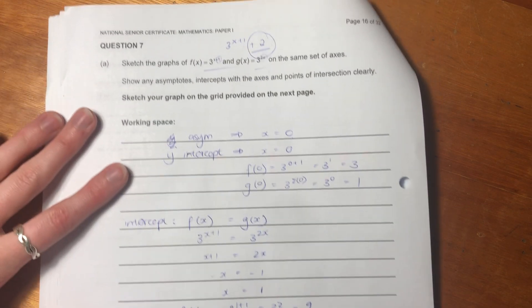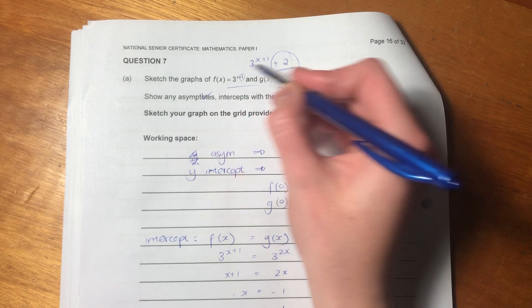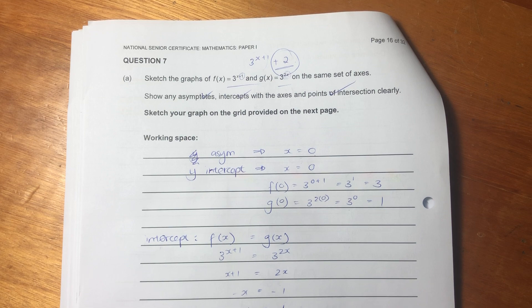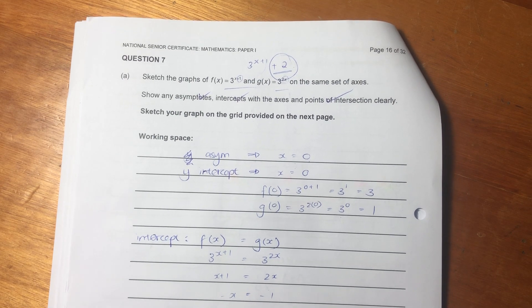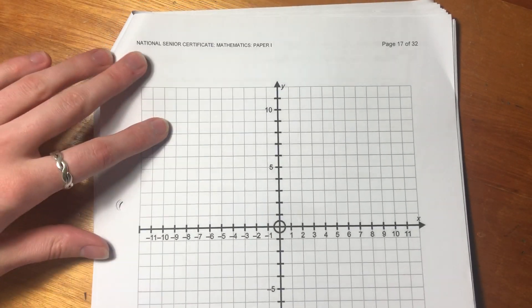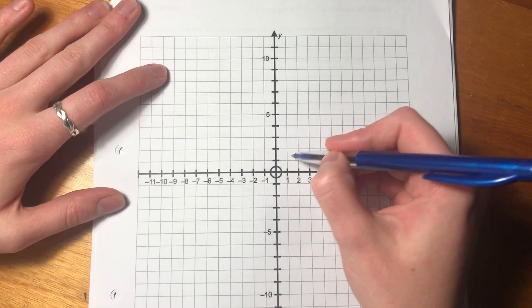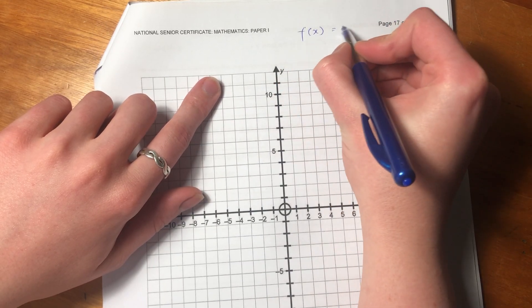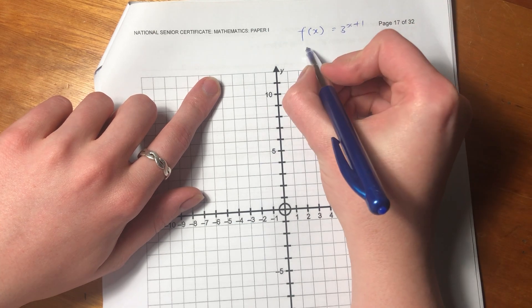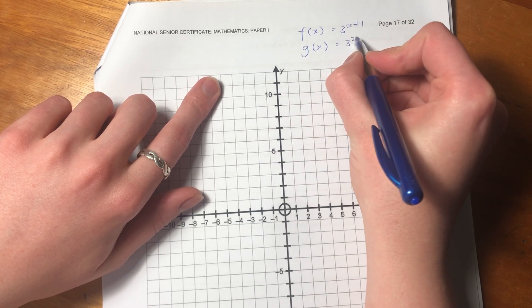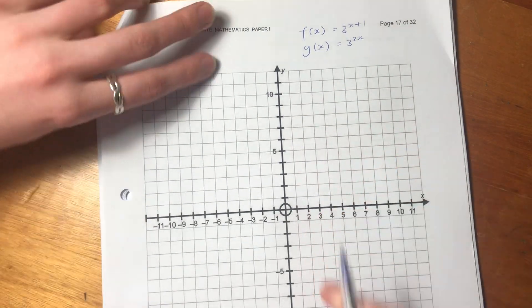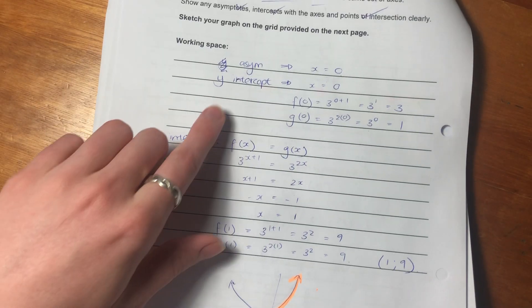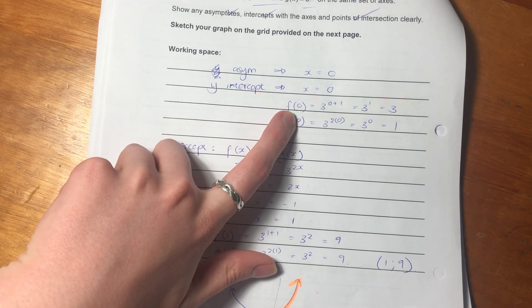Let's just check that it's the same for g because sometimes we can do little mistakes in our workings. Okay, perfect. So the point of intersection is 1 and 9. So now we have all our information that we need to draw a graph. We're in a good place. We've got all the things they've asked us for. So we've got the asymptotes, we've got the intercepts, and we've got the points of intersection. So we've done everything they want us to do. All we have to do now is draw the graphs. So unfortunately, it's not on the same page. We're going to have to be doing a bit of flipping, but that's okay. So we said the y-intercept. So let's just write that again. So we have f(x) equals 3^(x+1). G(x) equals 3 to the power of 2x.